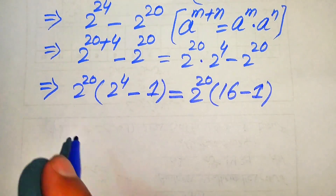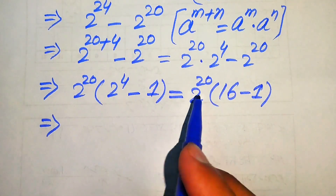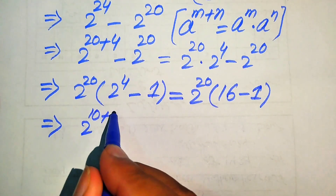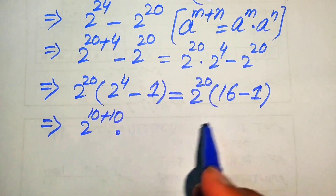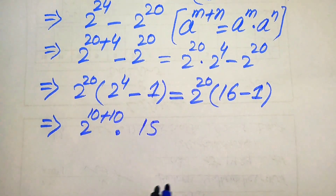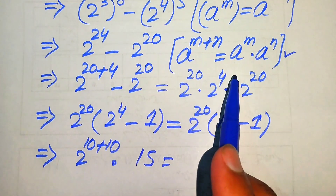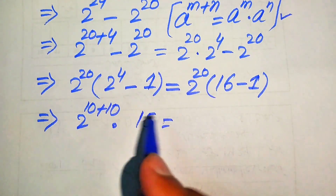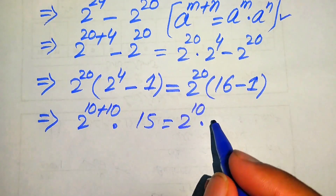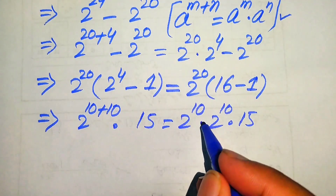For further simplification, we write 2 to the power of 20 as 2 to the power of 10 plus 10, multiplied by 16 minus 1, which equals 15. Applying the exponent law again, we break this and it becomes 2 to the power of 10 multiplied by 2 to the power of 10, multiplied by 15.